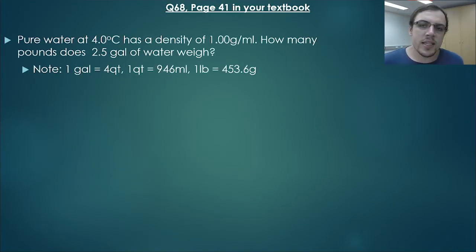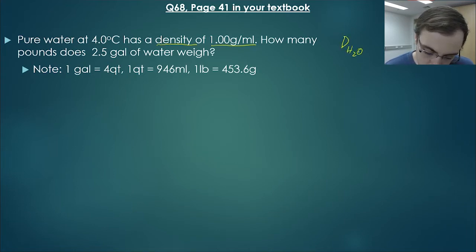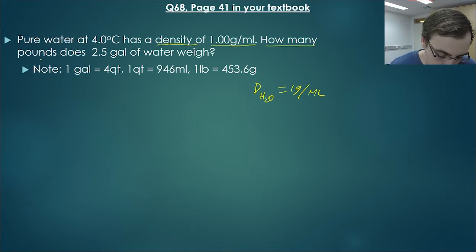Let's move on now. We're going to get more into the tricky ones. This one is question 68, page 41 in your textbook. Pure water at 4 degrees Celsius has a density of 1 gram per mil. How many pounds does 2.5 gallons of water weigh? We're given some key pieces of information. The first thing is, we are given the density of water at 1 gram per mil. How many pounds—the question wants to know how many pounds is in 2.5 gallons of water. We've also been given some conversions, some units here, and we can use those to convert it.